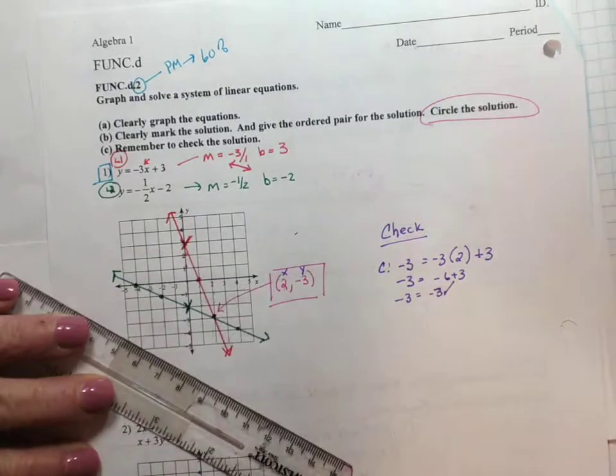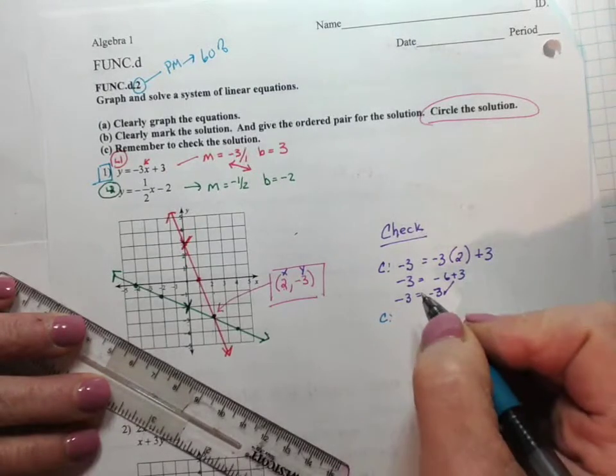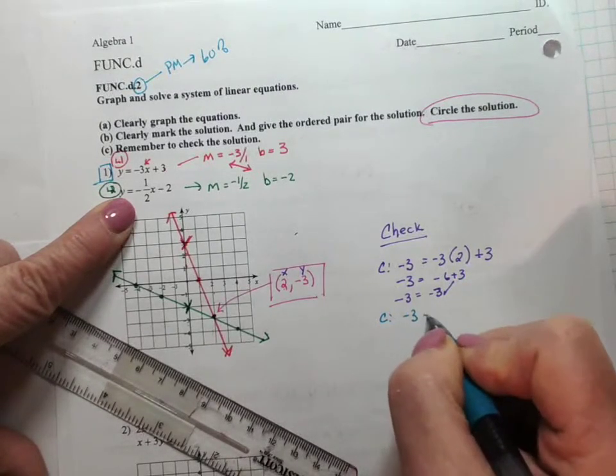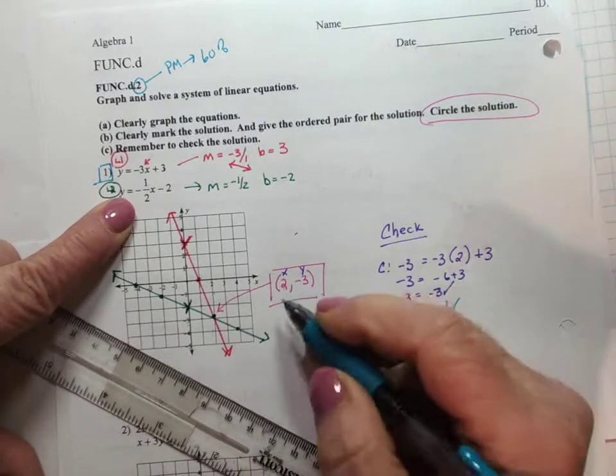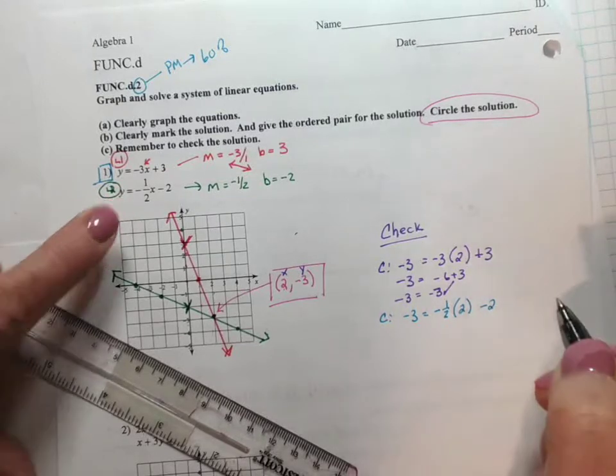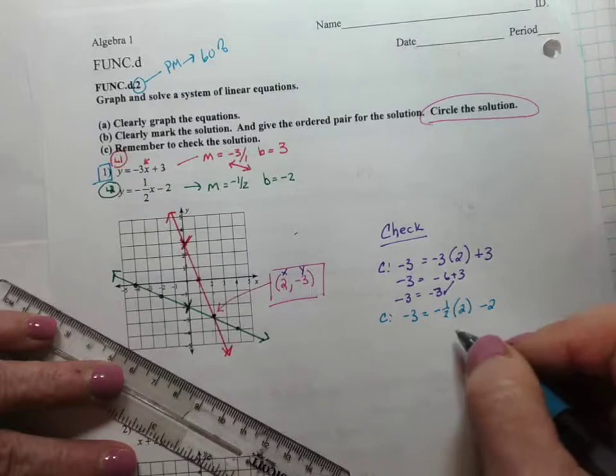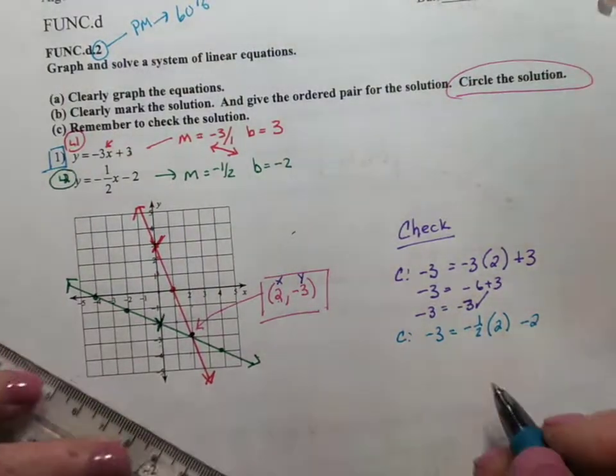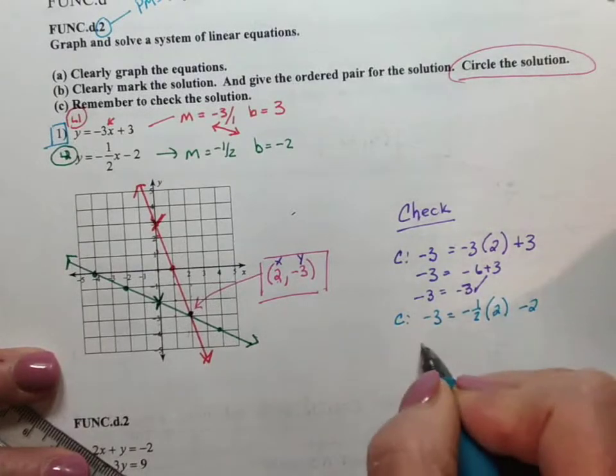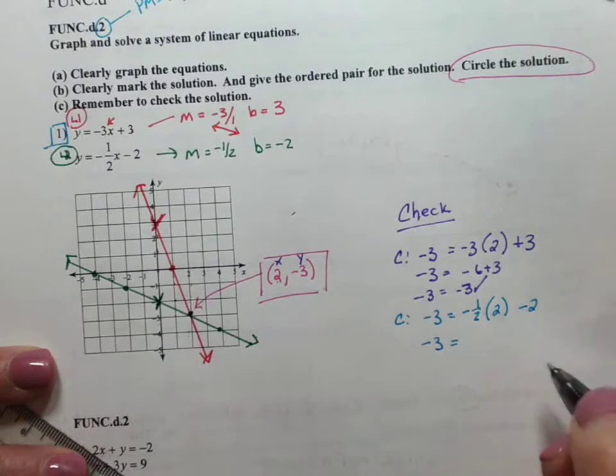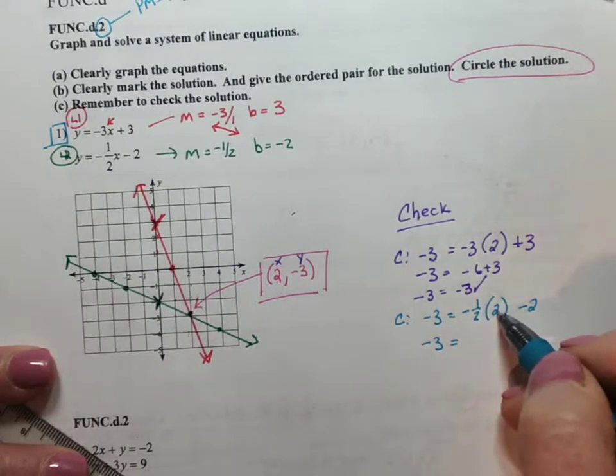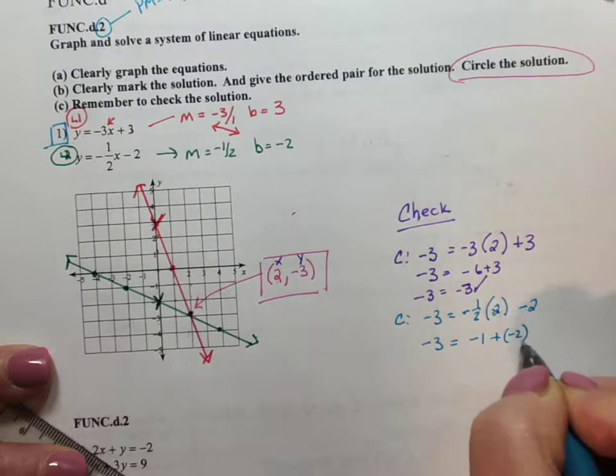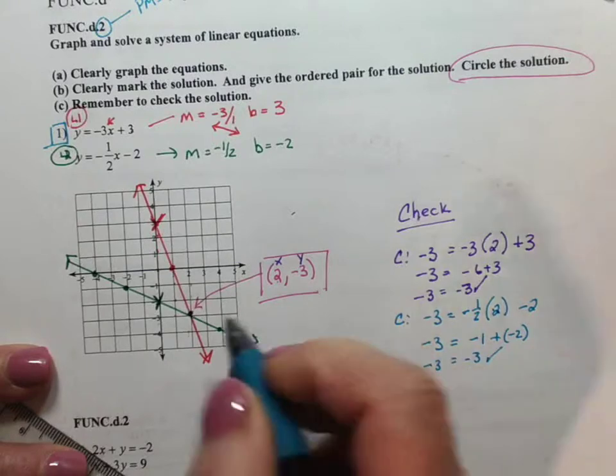Now I'm going to check it in the second equation. And so I have the second equation. y is negative 3 equals negative 1 half. x is 2 minus 2. Now in these problems, don't get worried about the fractions. Because you can use a calculator if you need to. So here we're going to get negative 3. If you don't know how to do this, plug it into your handy dandy calculator. 1 half of 2 is 1. And a negative times a positive is a negative. So it's going to be negative 1 plus negative 2. Negative 3 equals negative 3. Cha-ching. It checks. So this is correct.